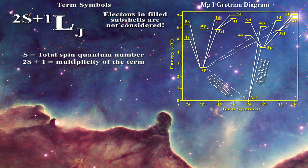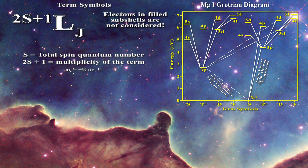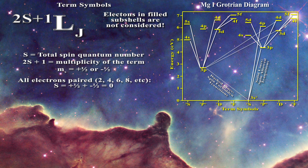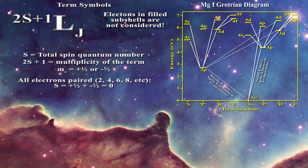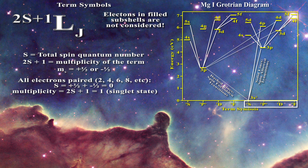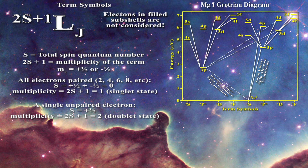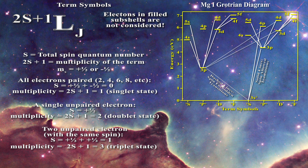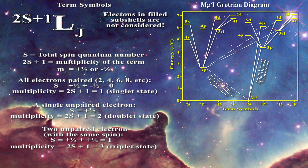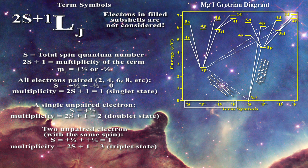An electron can have a spin of either plus one half or minus one half. If all electrons are paired then spin will equal zero, because plus one half plus minus one half equals zero — spectroscopists say that a singlet state exists. If there is a single unpaired electron then S will equal one half and the multiplicity will equal two, producing a doublet. If there are two unpaired electrons of equal spin plus one half then S will equal one, the multiplicity will equal three, and a triplet state is formed.